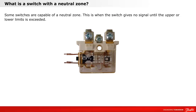Some switches are capable of a neutral zone. This is when the switch gives no signal until the upper or lower limits are exceeded. On the following pages, you can see an example of a neutral zone application and a graph of the contact function.